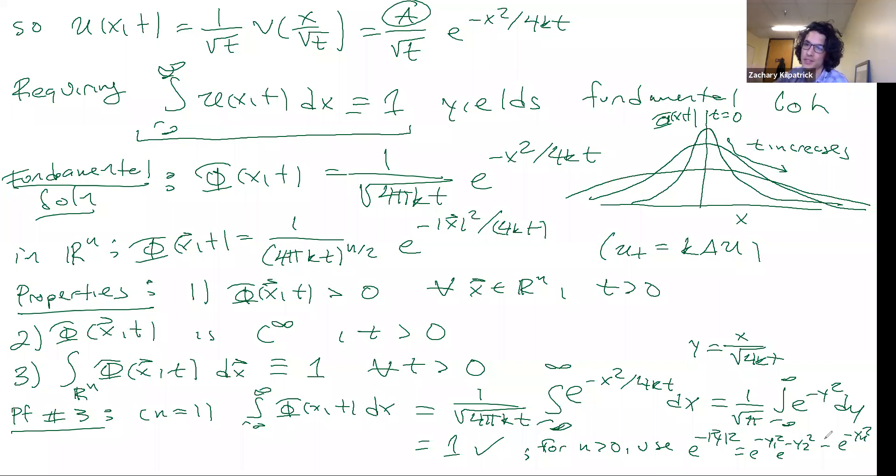And we can integrate each of those pieces separately, and we will end up that each of those is going to have a contribution of 1 over square root of 4 pi K, in that case.